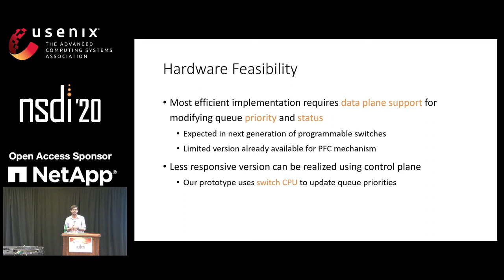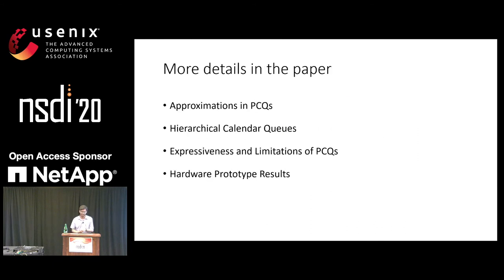This can be efficiently realized through a combination of data plane support enabling modifying queue priority or pause and unpause status, which is expected to be available in the next generation of programmable switches. A limited version of this functionality is already available for priority flow control today. We can implement a less responsive version using the control plane — in our prototype we use the switch CPU to update queue priorities, at slightly higher latency. There are more details in the paper discussing approximations, hierarchical data structures to increase calendar queue range, expressiveness, limitations, and hardware prototype results.